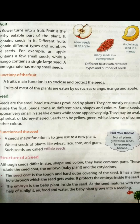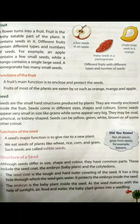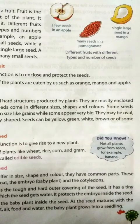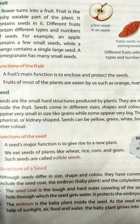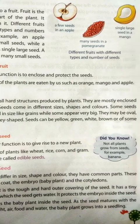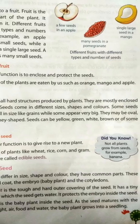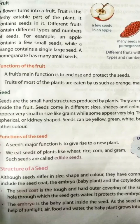Although seeds differ in size, shape, and color, they have common parts. These include the seed coat, the embryo — the baby plant — and the cotyledons.